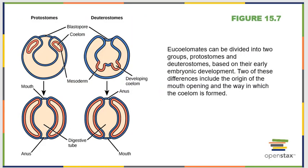Regarding protostomes and deuterostomes: at one point in development, you were simply a hollow ball of cells with one opening. If that single opening became a mouth first, those organisms are called protostomes. If it became an anus first, those are deuterostomes. We classify them this way because all protostomes follow the same developmental pattern, and all deuterostomes share the same genes dictating their developmental pattern.